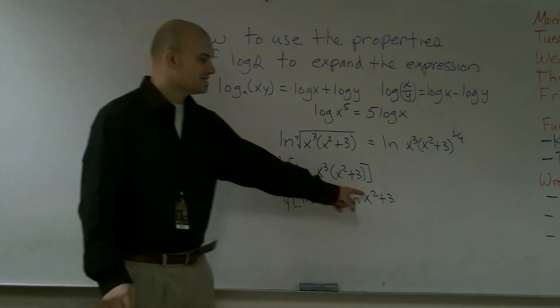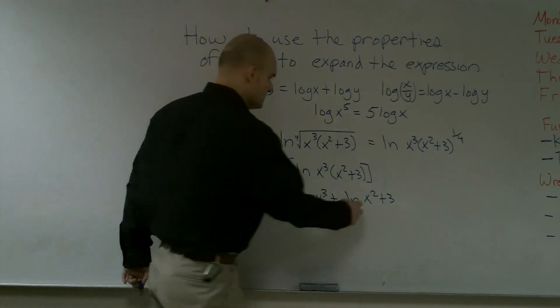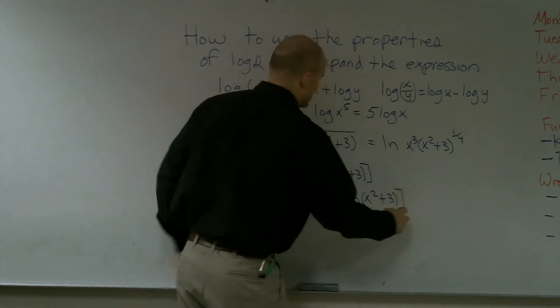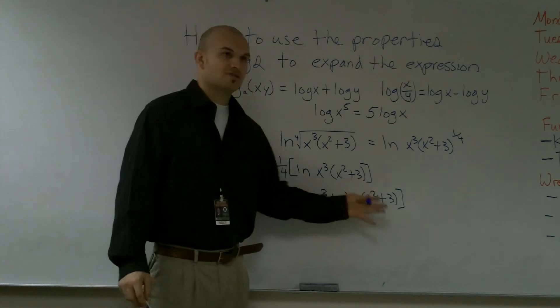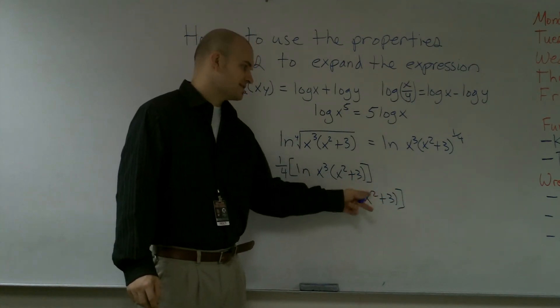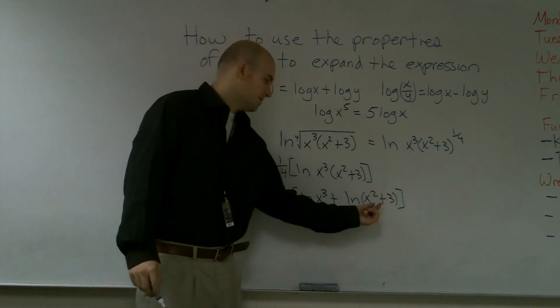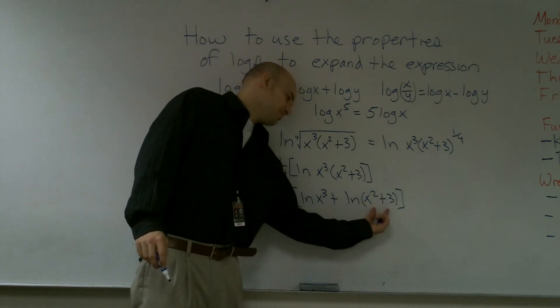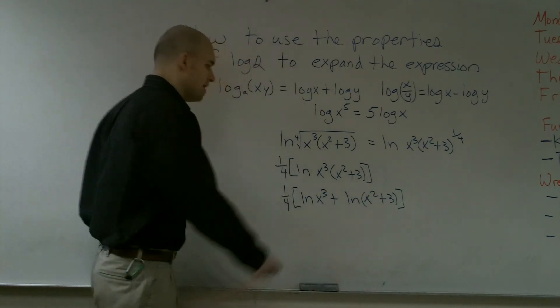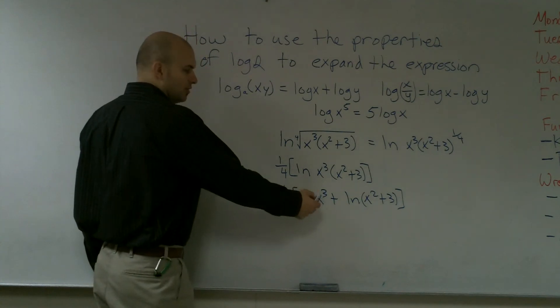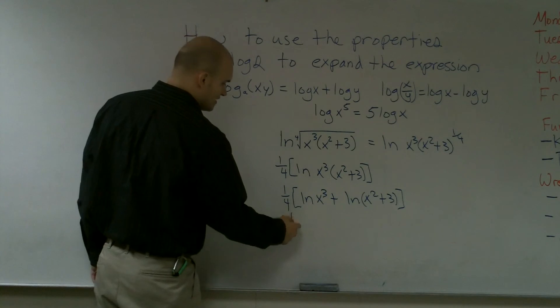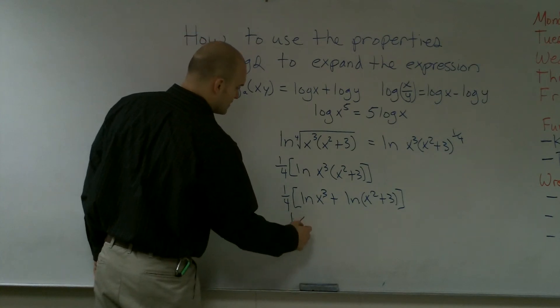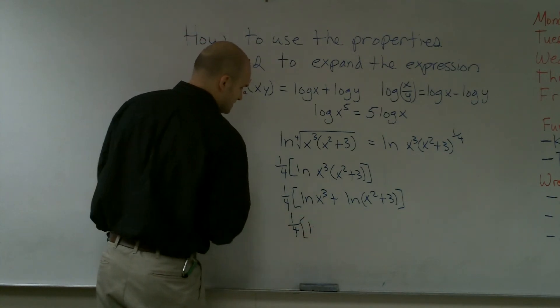Then I notice that since this is a square inside my ln bracket, I'm not going to put this exponent in front because it's going to be x squared plus 3 because this is not the square of my whole function in my natural log. However, this one, my whole term inside of here is being cubed, so I'm going to have to put this in front. So my final answer would be one-fourth on top, bringing the 3 in front, ln of x plus ln of x squared plus 3.